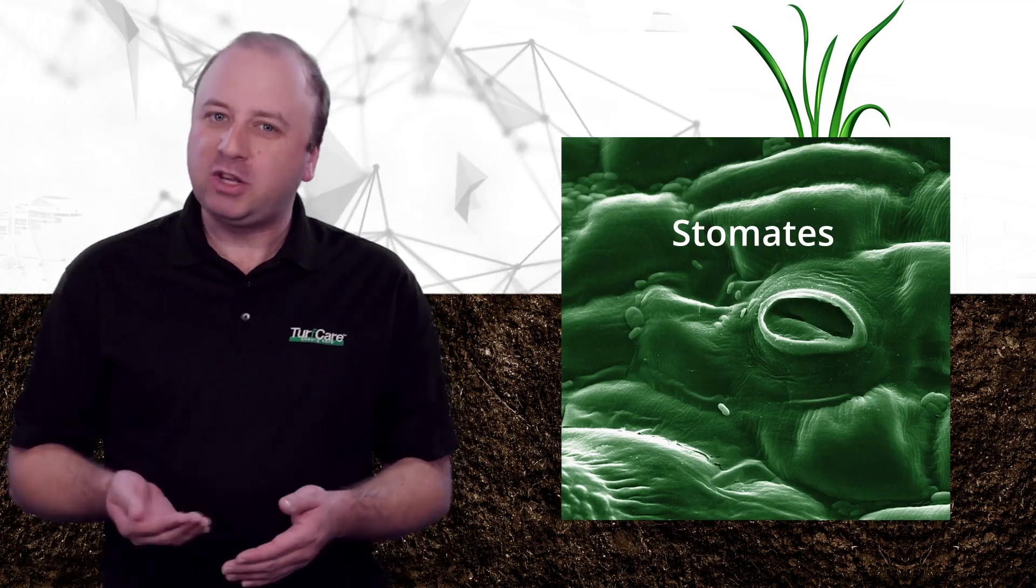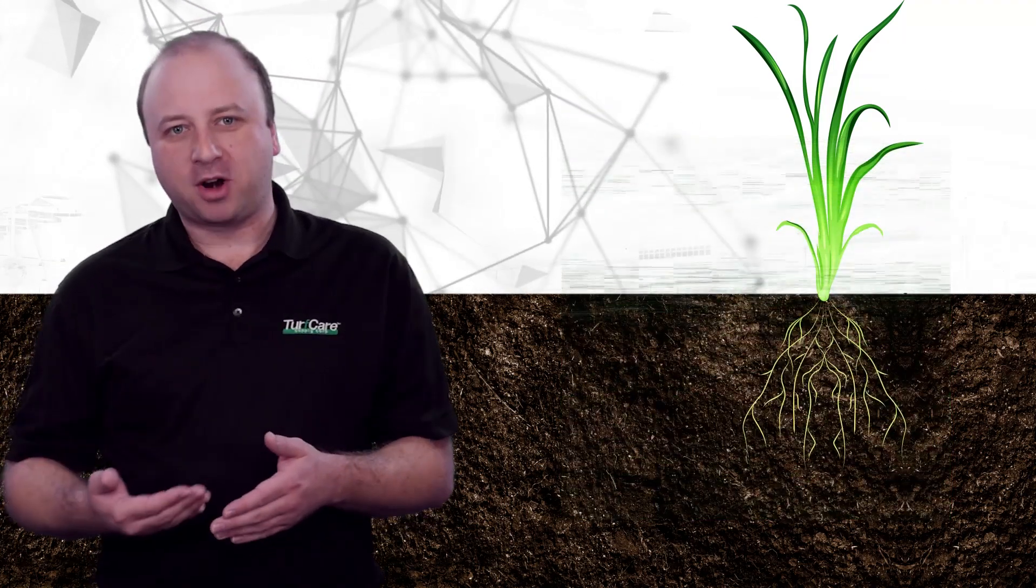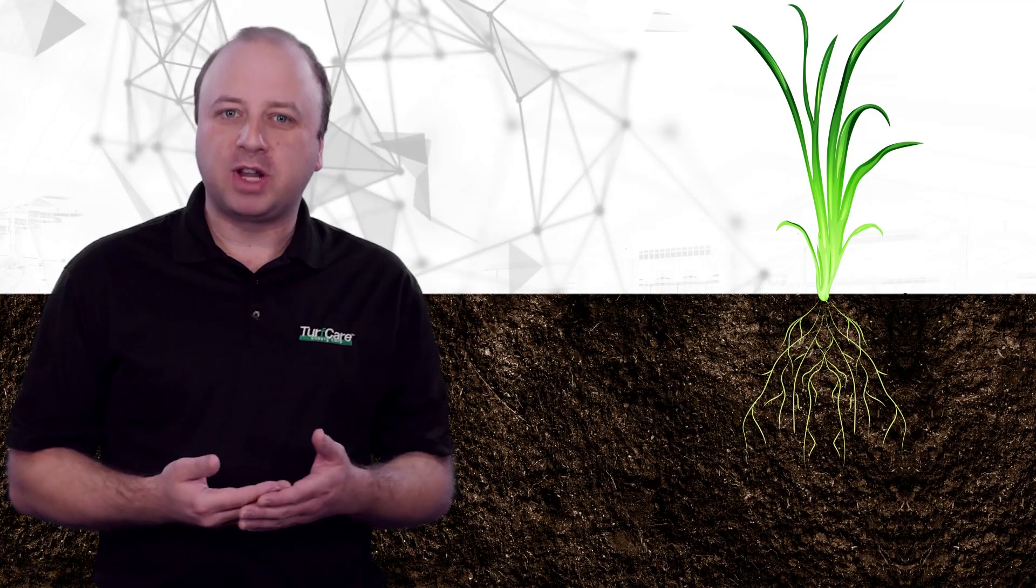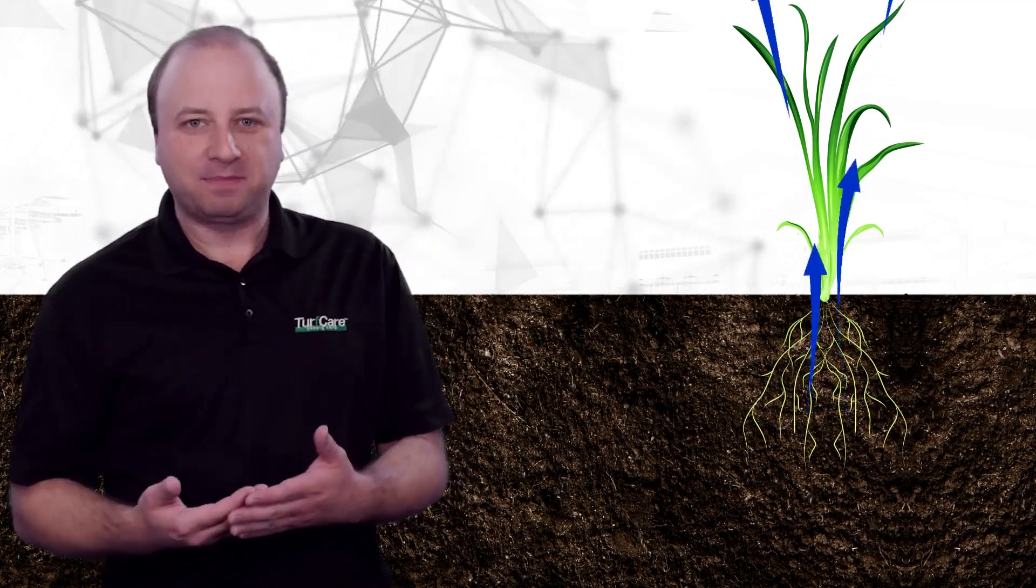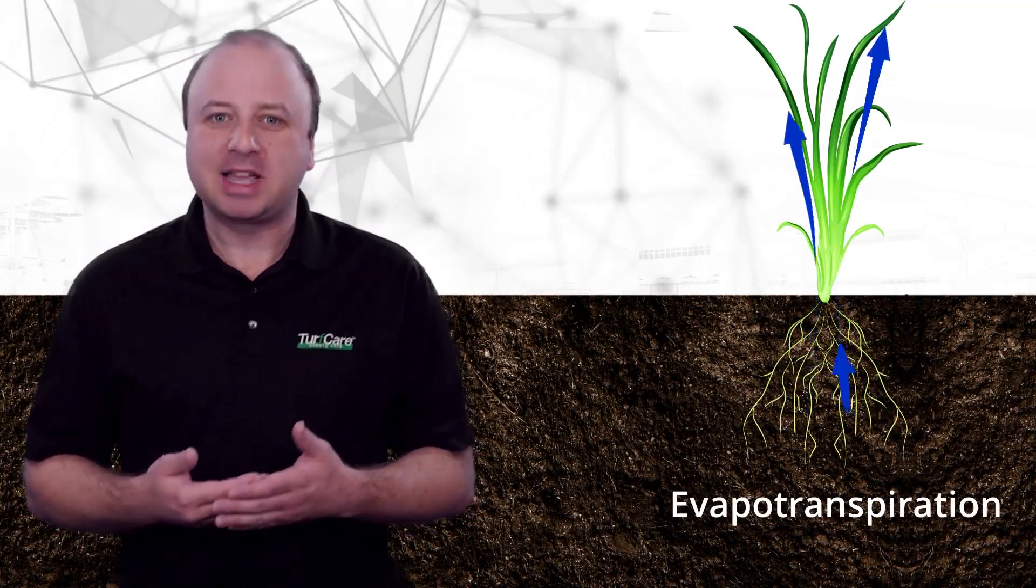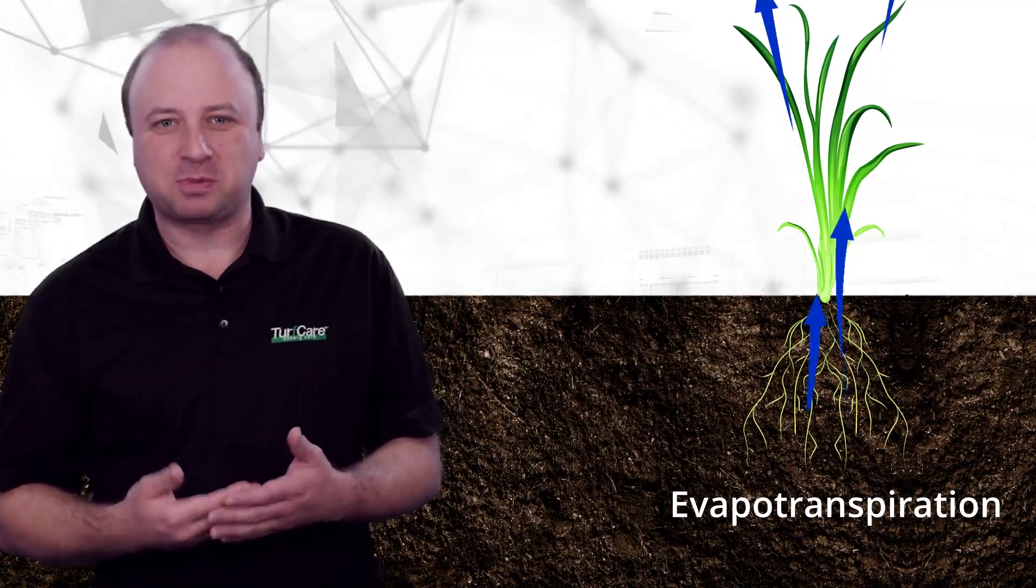Remember, for plants to take up any nutrient, that nutrient must be soluble, meaning it can be dissolved in water. Plants move dissolved nutrients to where they are needed through vascular tissues called xylem. This entire process takes place thanks to a principle called evapotranspiration.